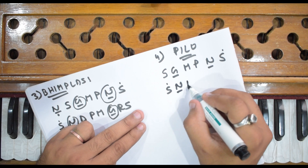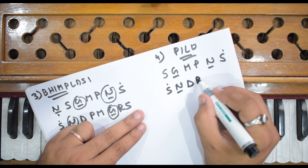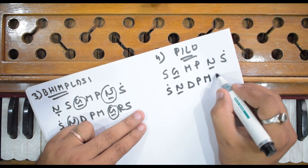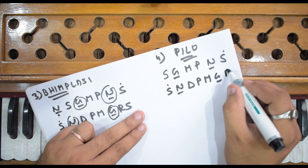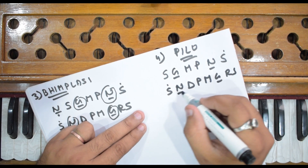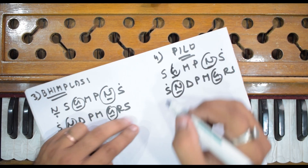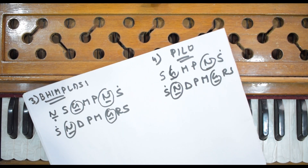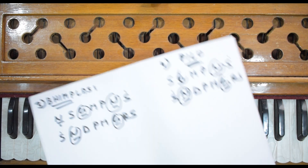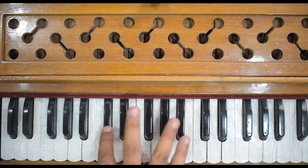The fourth raag has the following notes: Komal Ni, Dha, Pa, Ma, Komal Ga, Re, Sa. Here you can see that both Ga and Ni are Komal. There is no other altered note in this raag.